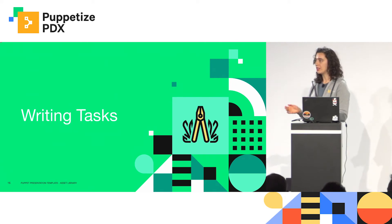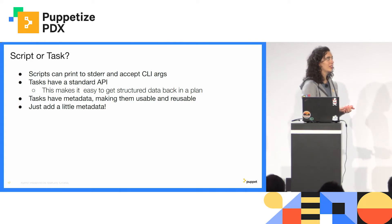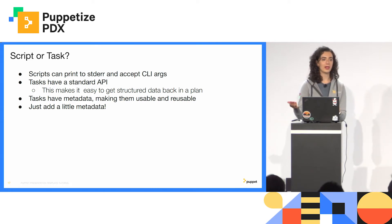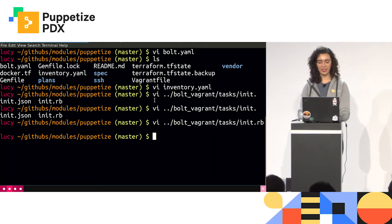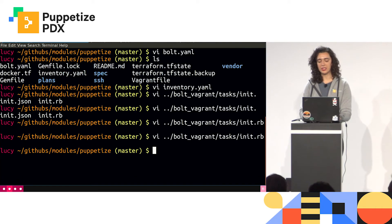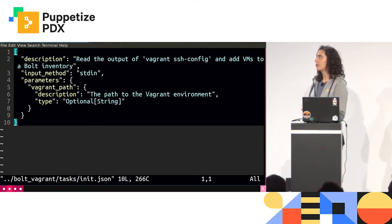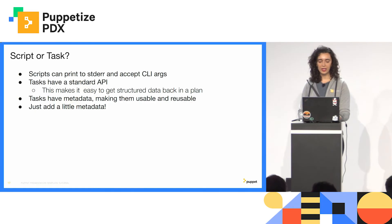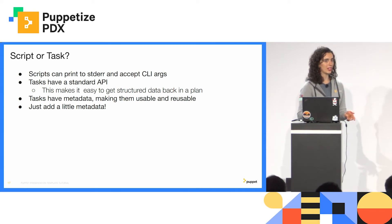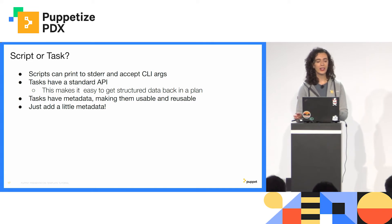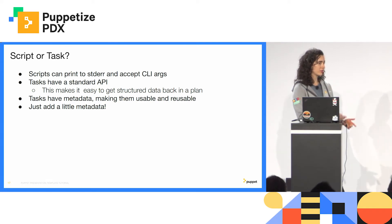The next topic is writing tasks. The first question is: should it be a script or a task? As a refresher, a task is basically just a script with metadata — a Ruby script with some JSON next to it that has a description and describes the parameters. Scripts can print to standard error and accept command line arguments like a normal script. Tasks have a standard API where you pass arguments either on standard in or as environment variables through Bolt.